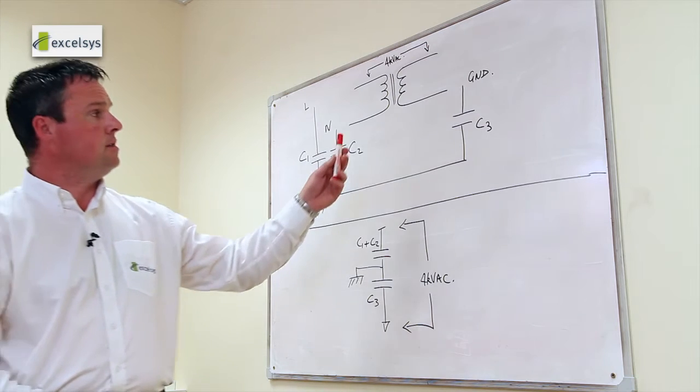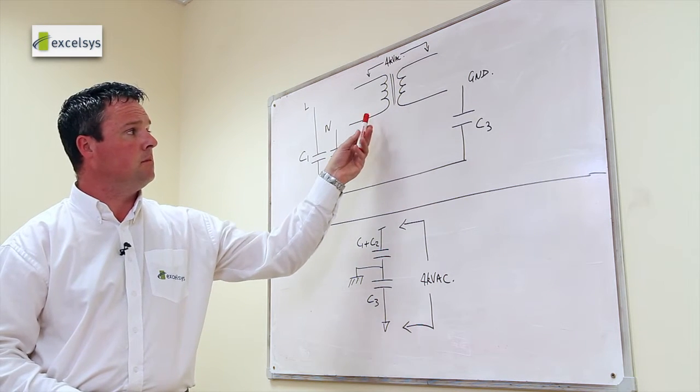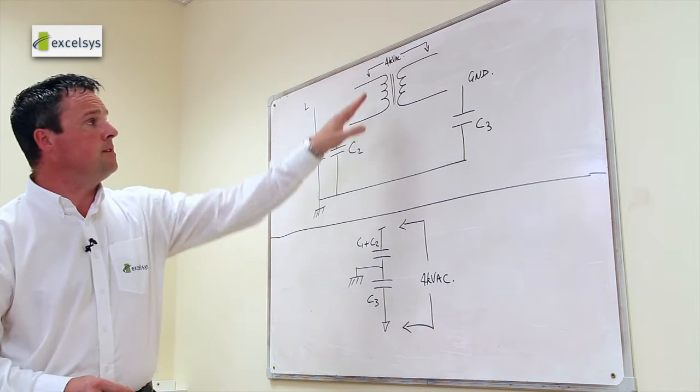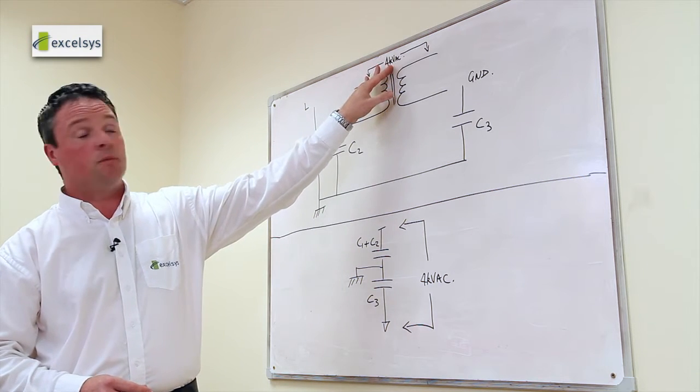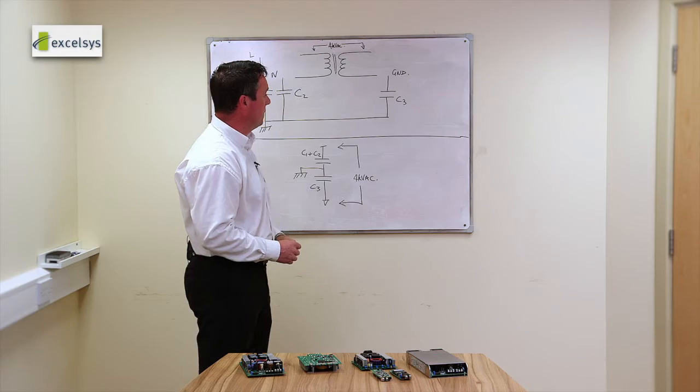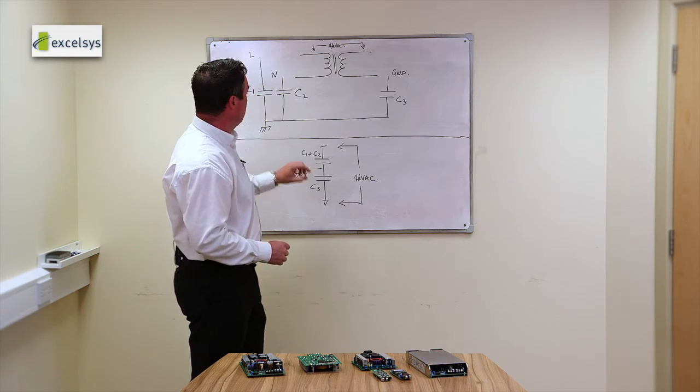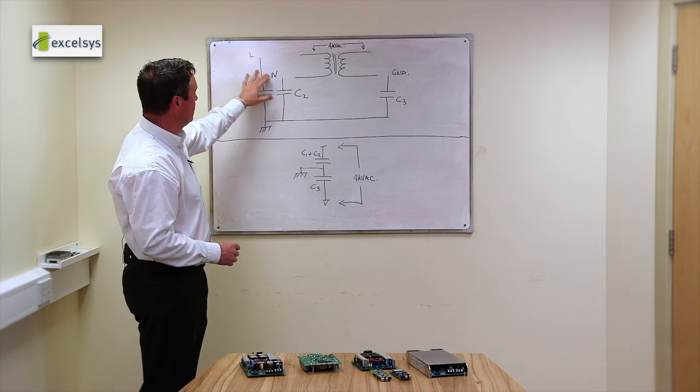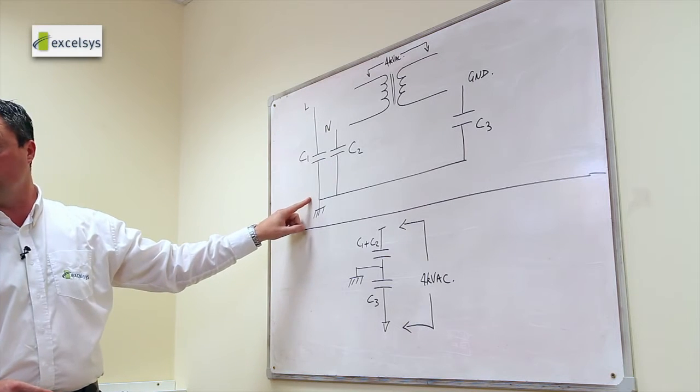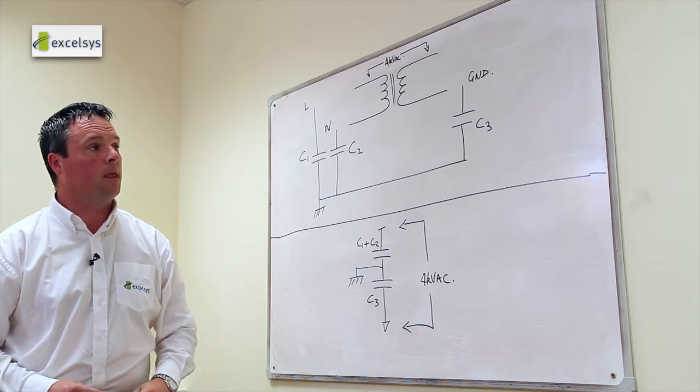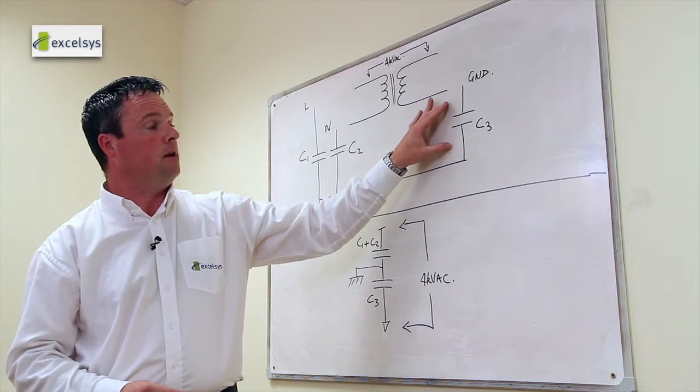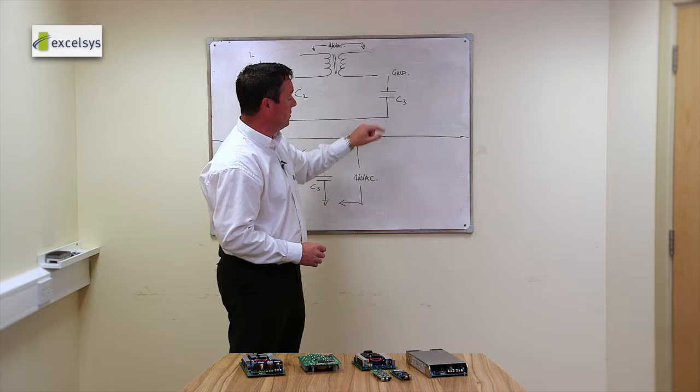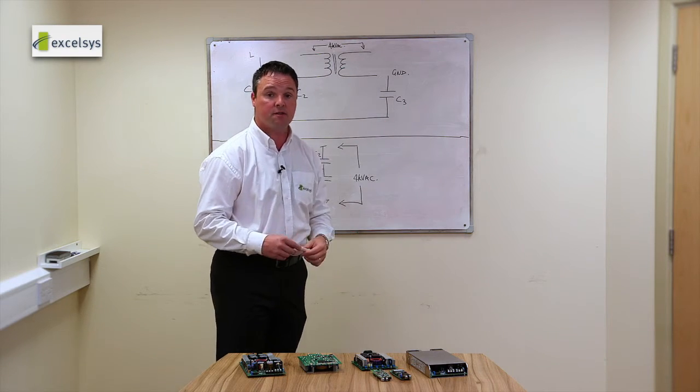What I've drawn here is the isolation transformer, primary side and secondary side. This is where the 4kV test is to be applied from input to output. What I've drawn here are the Y capacitors from each phase live and neutral to earth, C1 and C2. And I've also drawn the capacitors from the secondary side from ground to earth which we have in our designs for EMI purposes.